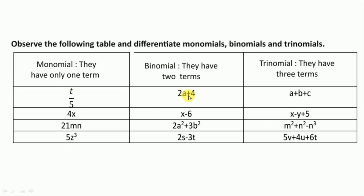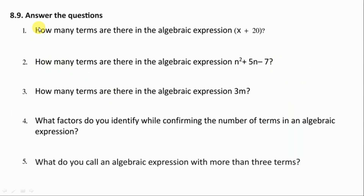Here, if there is a plus or minus, that means two terms. So these are examples of binomials. And here, a combination of one plus or one minus, or two plus or two minus, gives a trinomial. Some examples are given here.